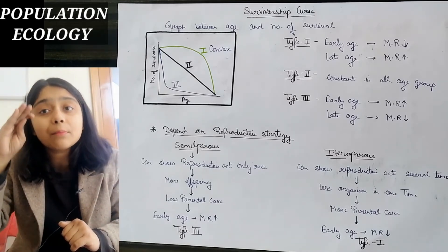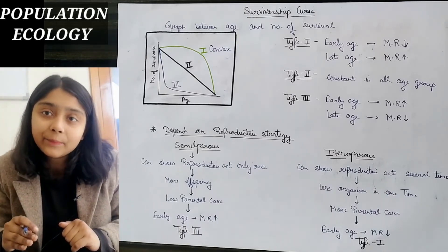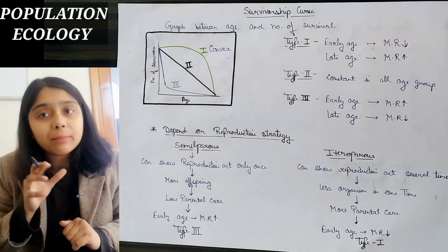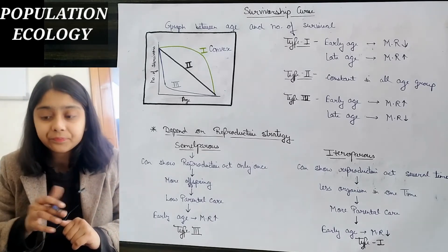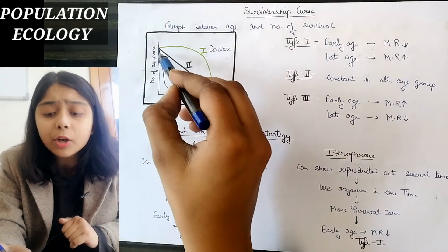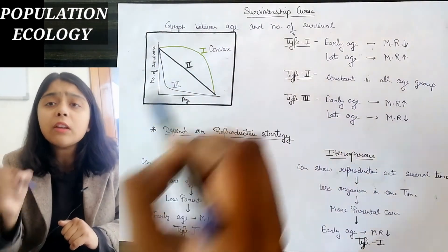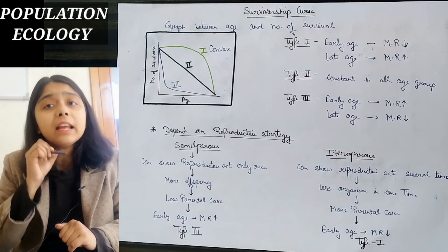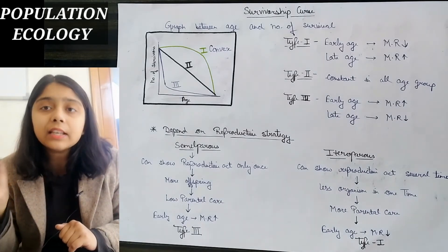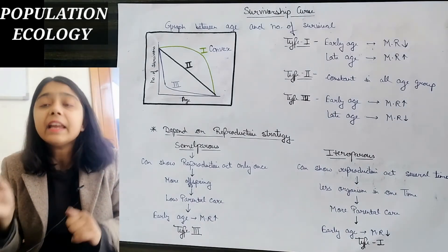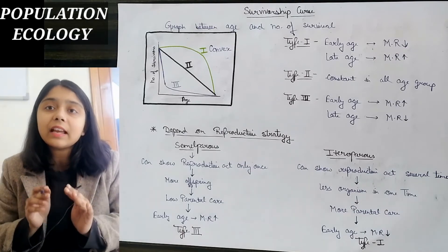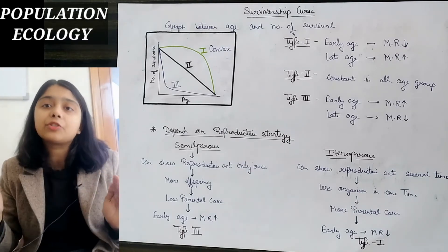In some age groups, the number of survivors is constant throughout full age. It means that the mortality rate is constant in every age group. This is the type 2 survivorship curve, where mortality rate remains constant across all age groups.